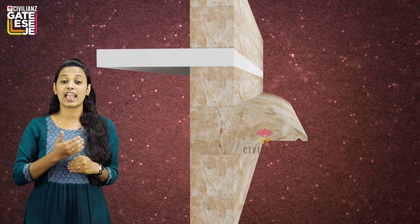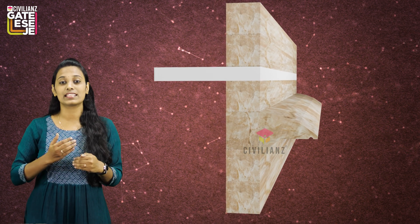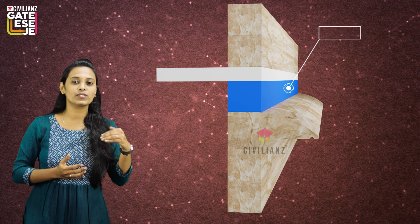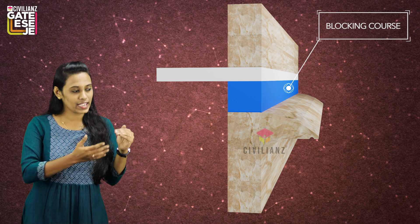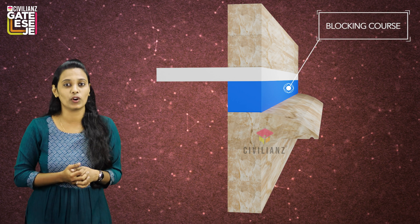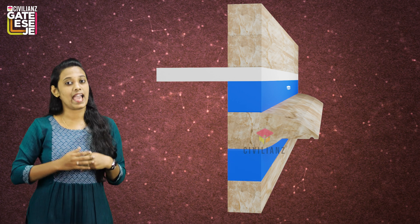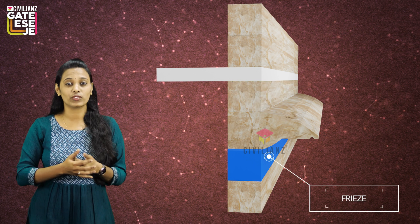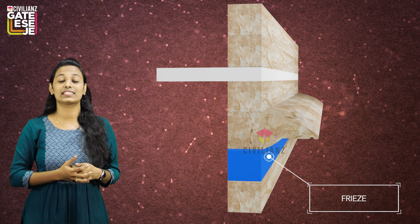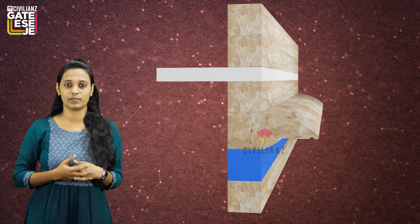This is a projecting course. So, in order to give stability and to prevent overturning, we have to provide some additional support. For that, a layer of stone is provided just above the cornice and it is termed as blocking course, and another layer of stone provided immediately below the cornice is termed as frieze.